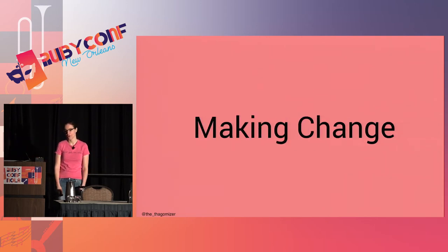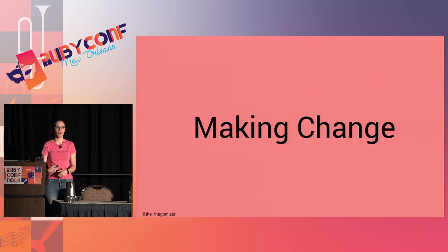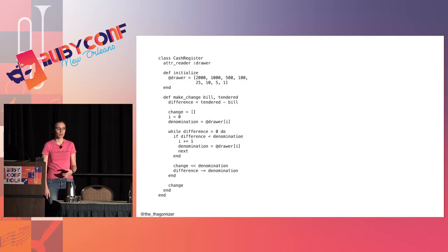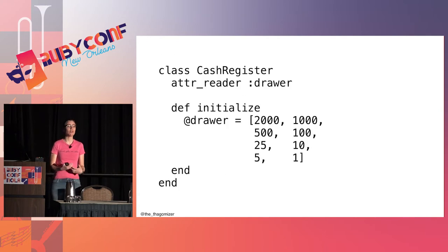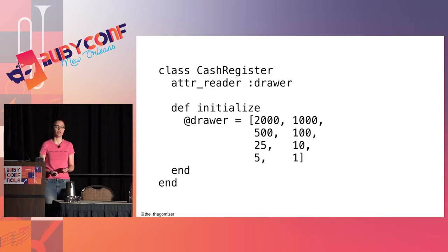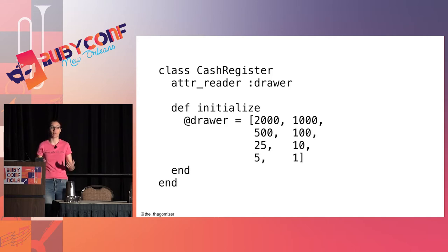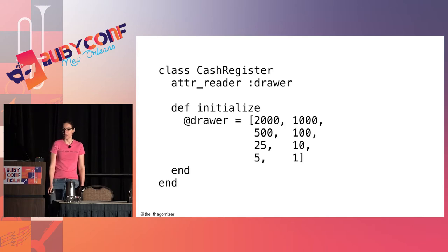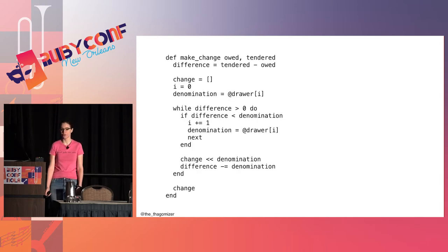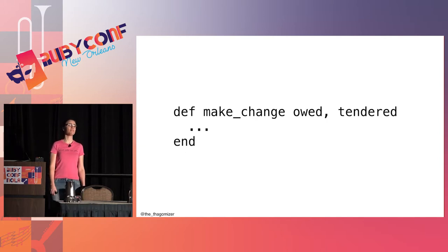On to the motivating example — making change OO style. I have a class called CashRegister, because that's what I use to make change. My cash register has a cash drawer containing denominations: 20s, 10s, 5s, and 1s, then quarters, dimes, nickels, and pennies. If I were doing a more thorough implementation, I could track the counts of each denomination as well. Here is the method that makes the change — let's build it up piece by piece. The method signature: make_change takes an amount_owed and the amount_tendered.